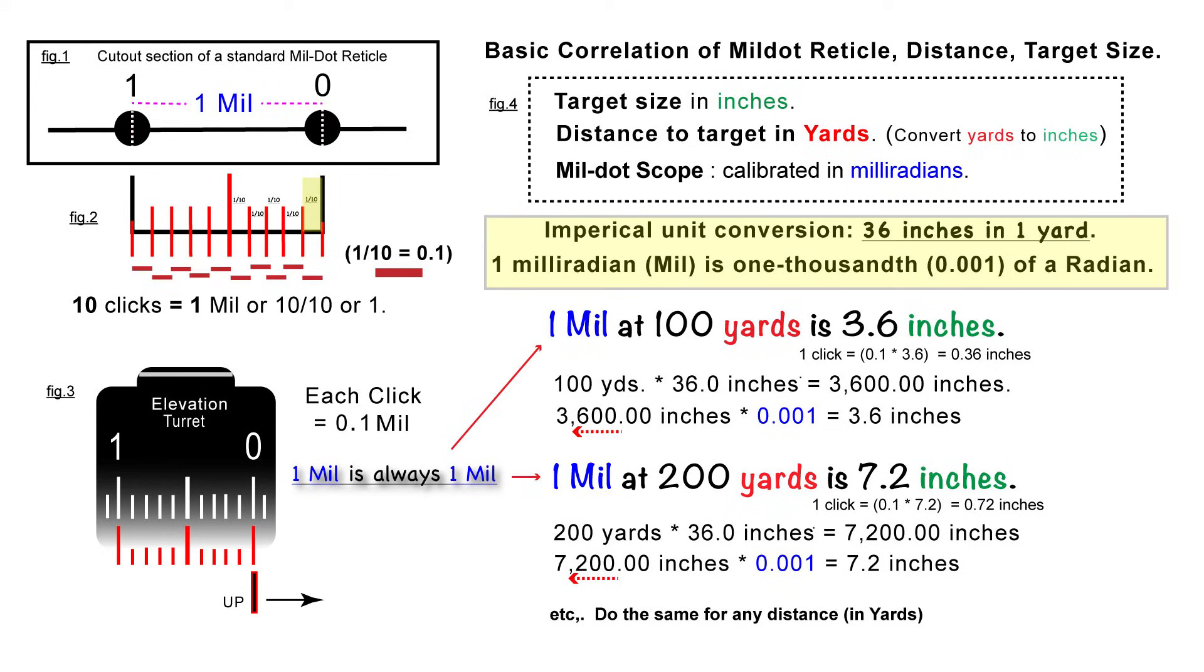But on your elevation turret, what is one click? And so one click at 100 yards would be, you say, okay, one click on my turret is 0.1, so you multiply 0.1 times 3.6 inches, and you'll get for each one click on your turret it's 0.36 inches, or almost a third of an inch.